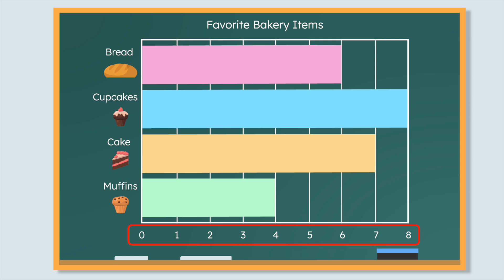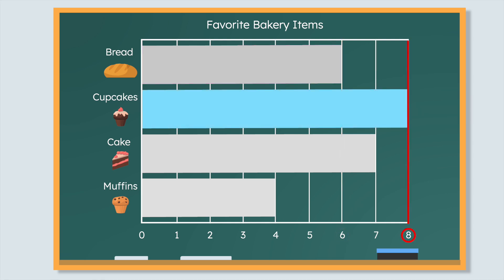The numbers we use to read the data are on the bottom. One of the cool things about bar graphs is that you can learn a lot before you even count the data. Let's see what we can learn about this data. Which item do you think is the least popular? Why do you think that? Right away, I can tell that muffins are the least popular because the muffin bar is the shortest. Let's go ahead and find the number of votes for each item. This bar graph doesn't have boxes for us to count, so we'll have to see where each bar ends to read the data. It looks like bread got 6 votes, cupcakes got 8 votes, cake got 7 votes, and muffins got 4 votes.